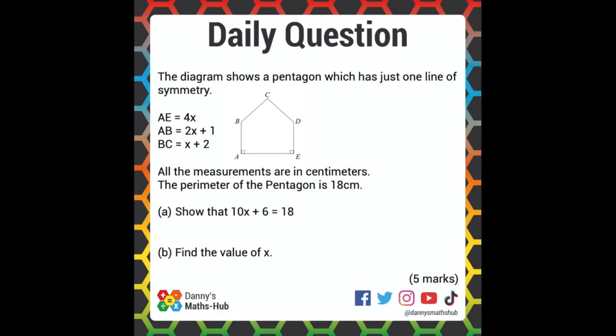The diagram shows a pentagon which has just one line of symmetry. We are told that the length AE is equal to 4X, length AB is 2X plus 1, and BC is X plus 2. All measurements are in centimeters, and the perimeter of the pentagon is 18 centimeters.